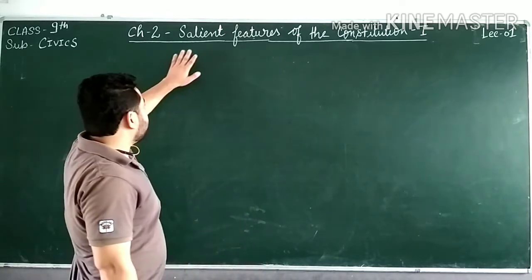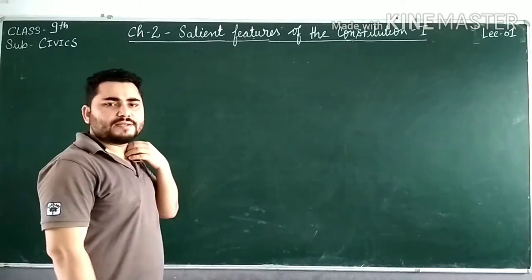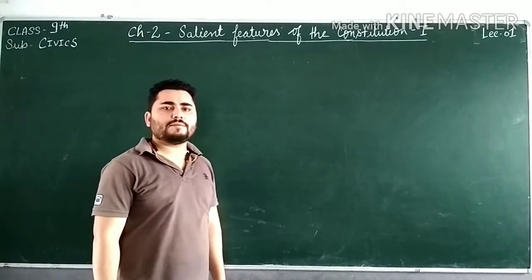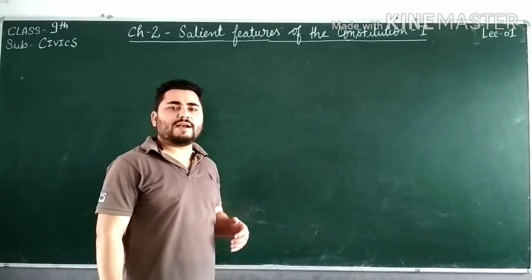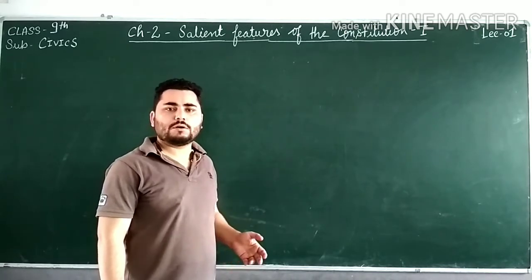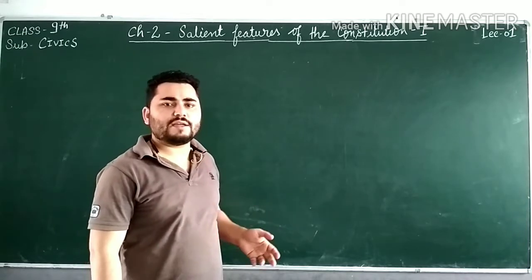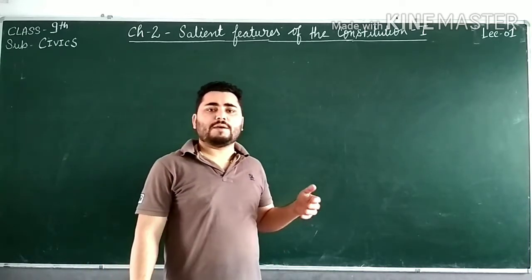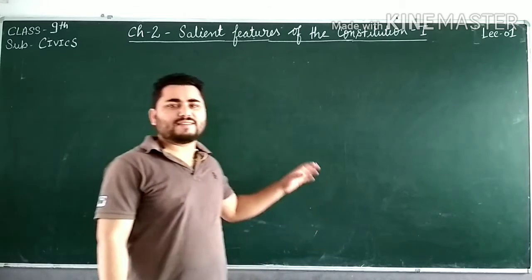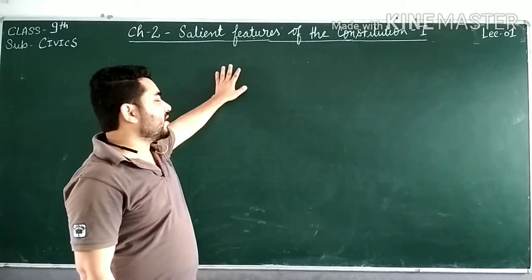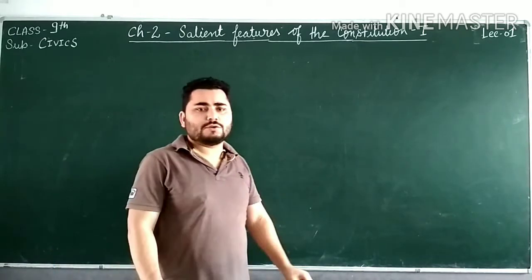The name of the chapter is 'Salient Features of the Constitution.' Salient means something which makes you stand out, or something which is outstanding because of its importance or prominence. So here we are going to study about the outstanding features of the constitution.